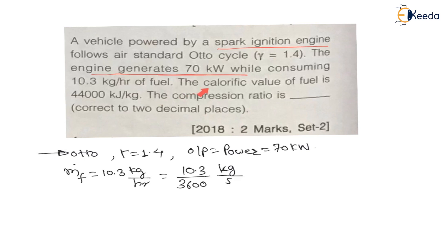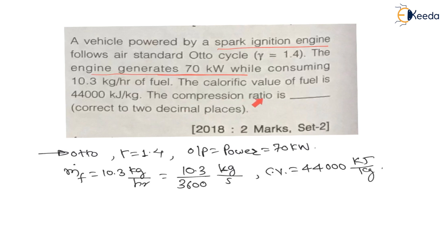The calorific value of fuel is given as 44,000 kilojoules per kg. Therefore, CV, the calorific value of fuel, is equal to 44,000 kJ/kg. The question asks for the compression ratio RK — that is, the compression ratio is how much?